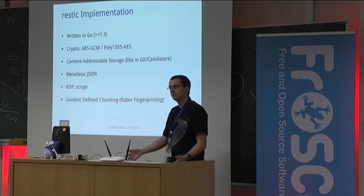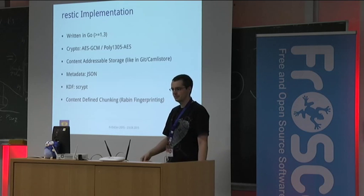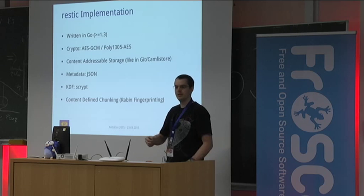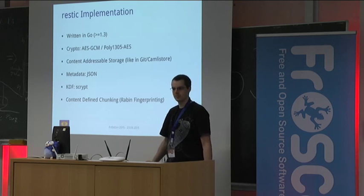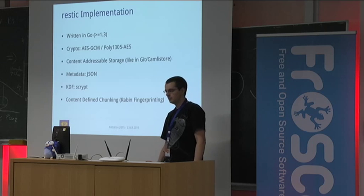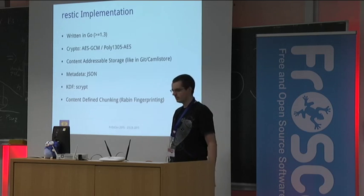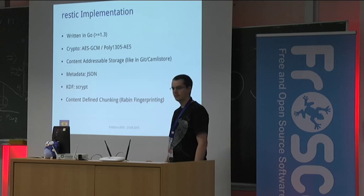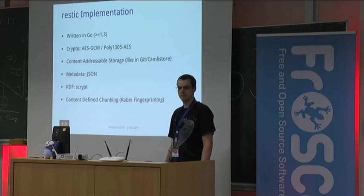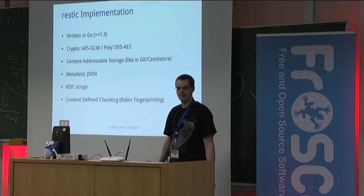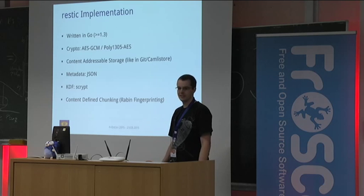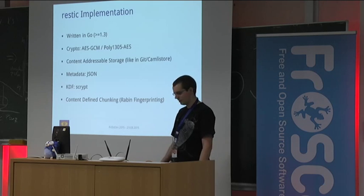For the key derivation function: at the moment backups are secured by a password, but you can't use a password directly as input for AES encryption. You need a key derivation function, and for that we use S-crypt, one of the better choices for key derivation. We also do content-defined chunking via Rabin fingerprinting. I wrote an implementation in Go for Rabin fingerprinting and it's already really fast, although it's only written in Go — not in Assembler or C yet, but that optimization is quite possible.